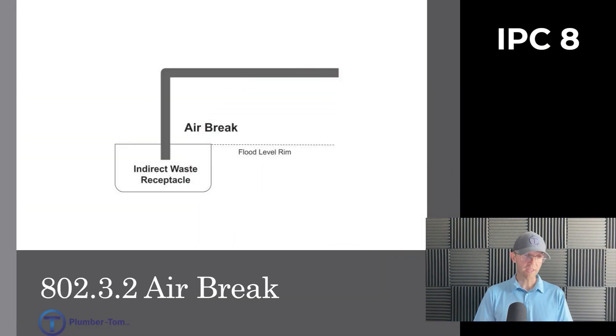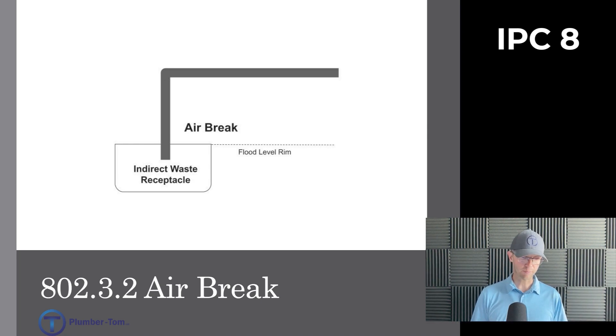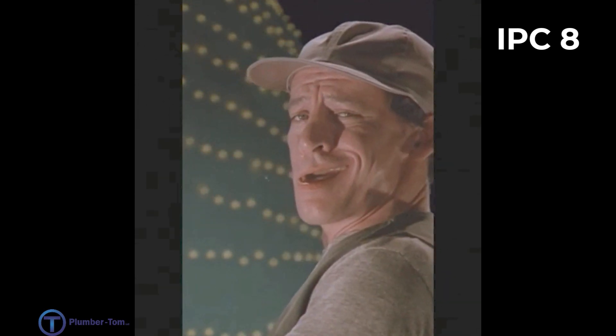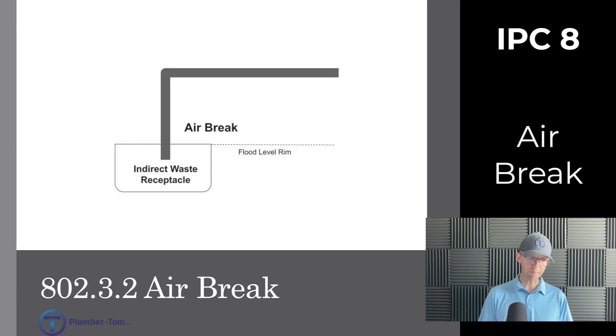Now let's contrast that with 802.3.2 where we get the definition of the air brake. Air brakes. It says an air brake shall be provided between the indirect waste pipe and the trap seal of the indirect waste receptor.